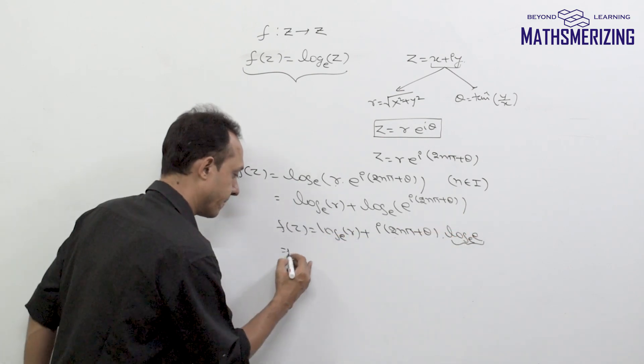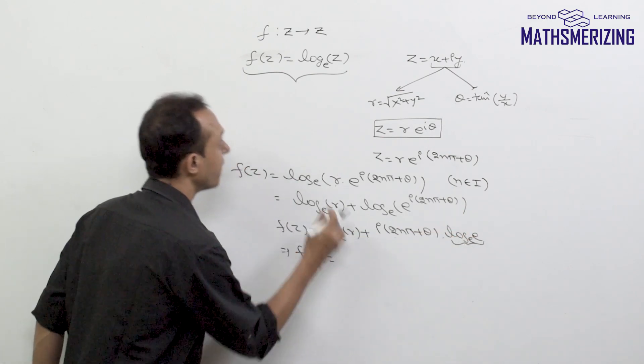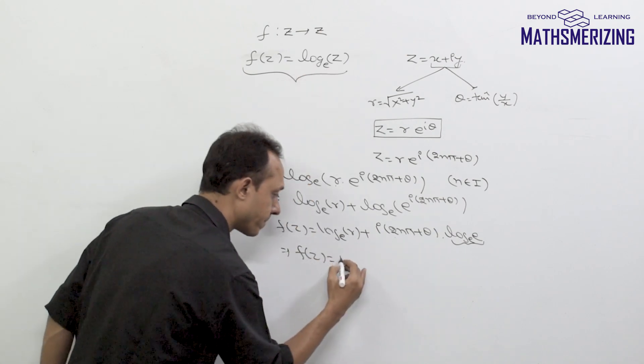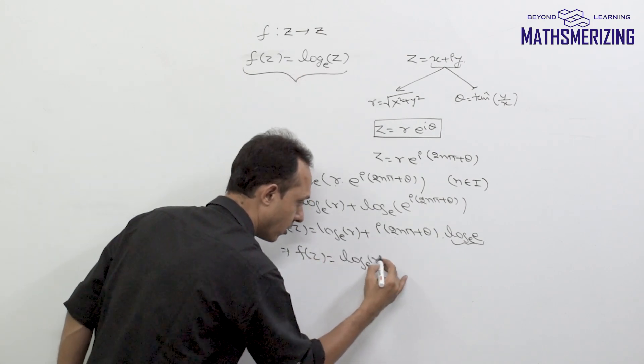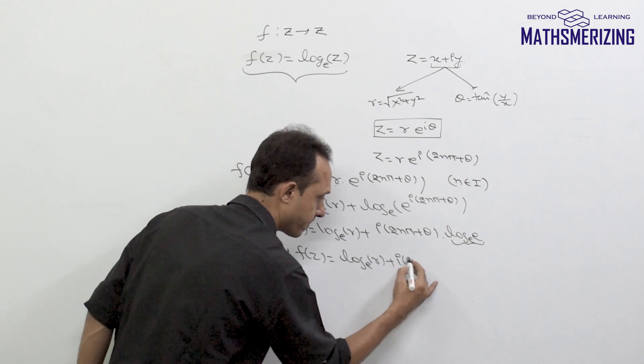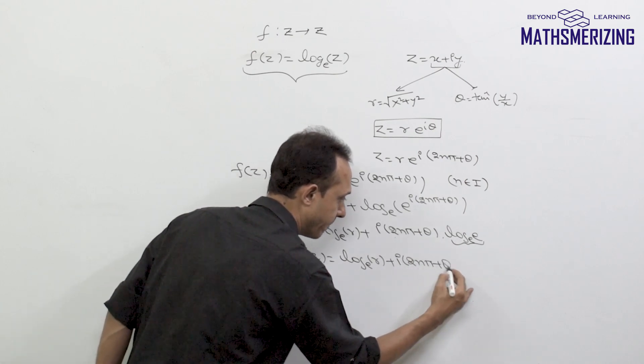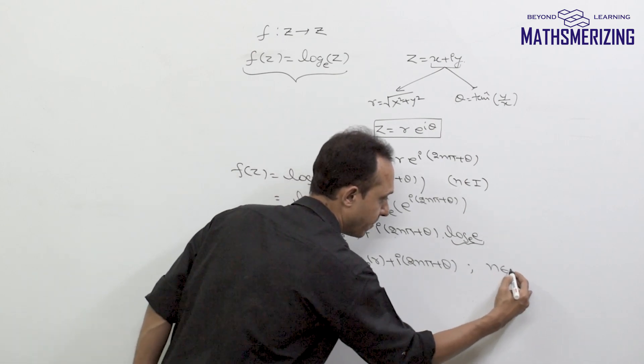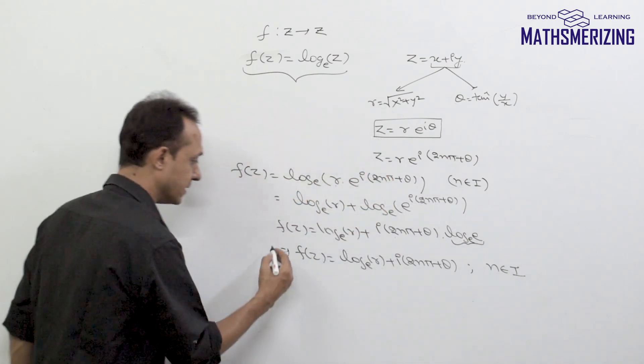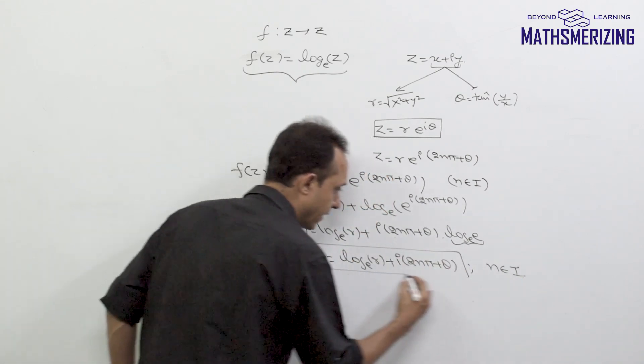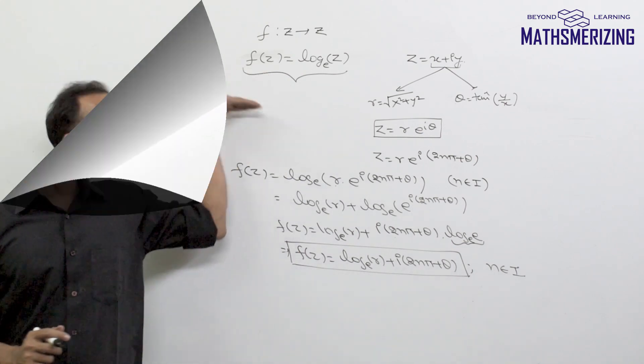So I can say the value of log z simply will be log r and then i*(2n*pi + theta) where n belongs to set of integers. So this is how we can find logarithms for complex numbers.